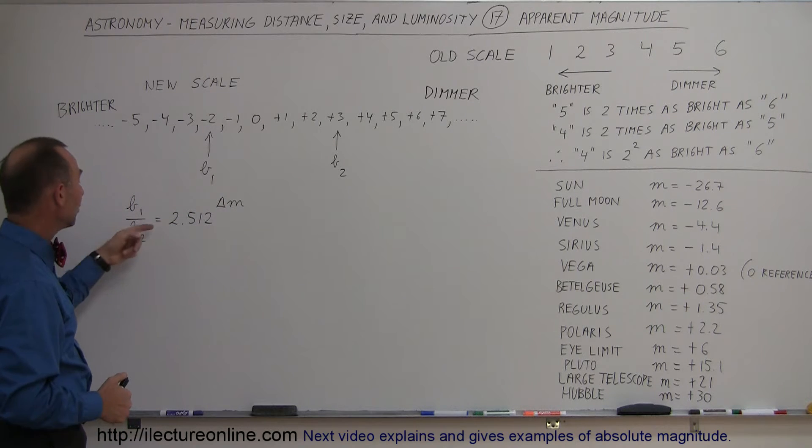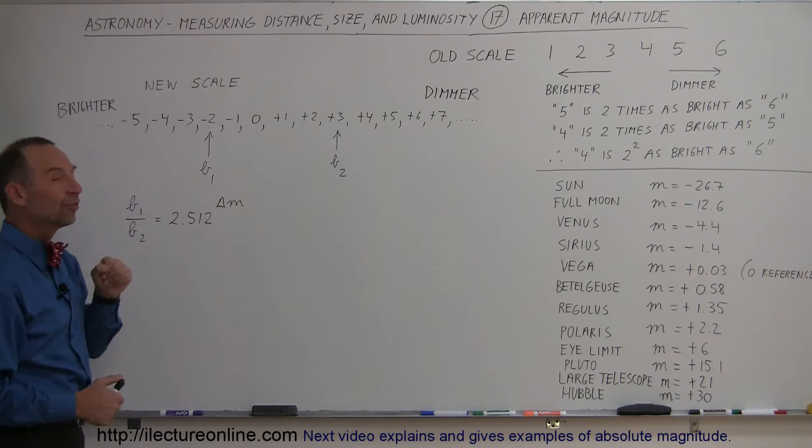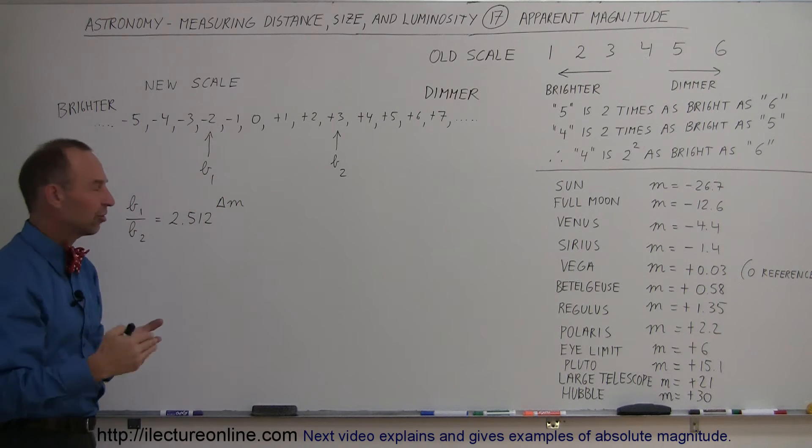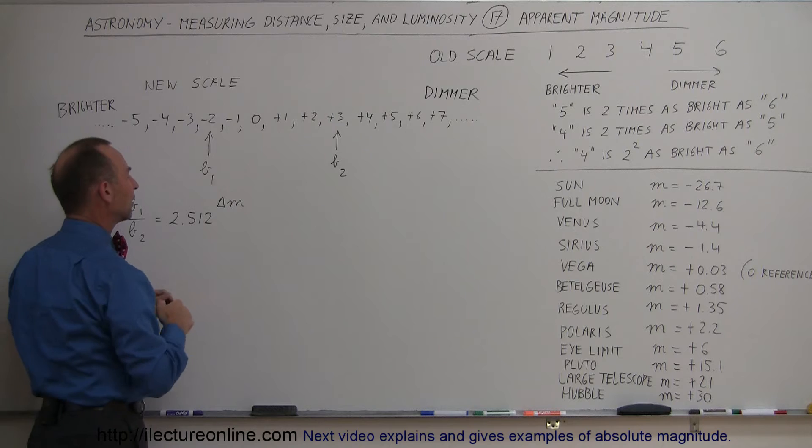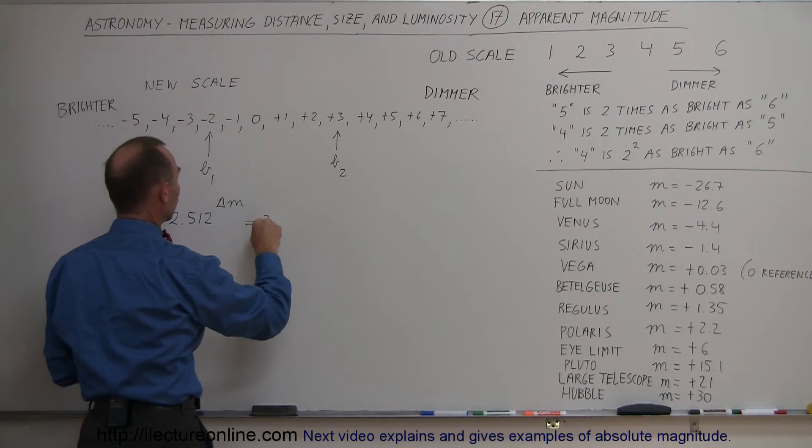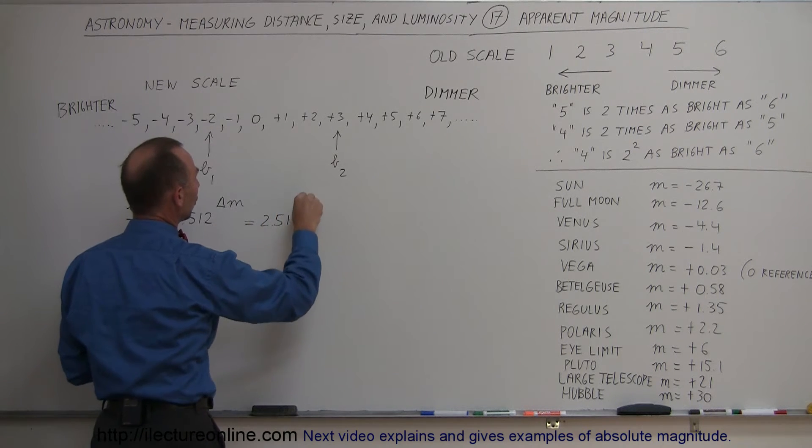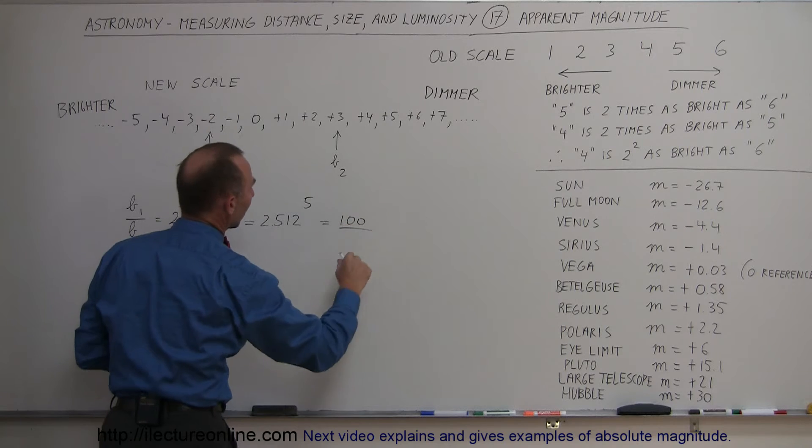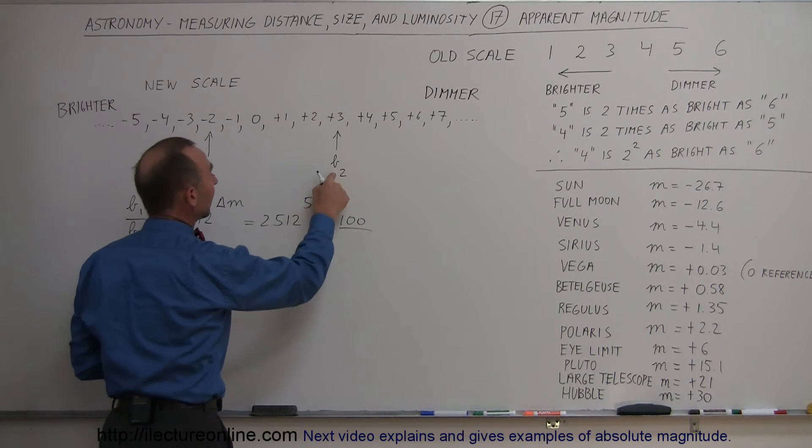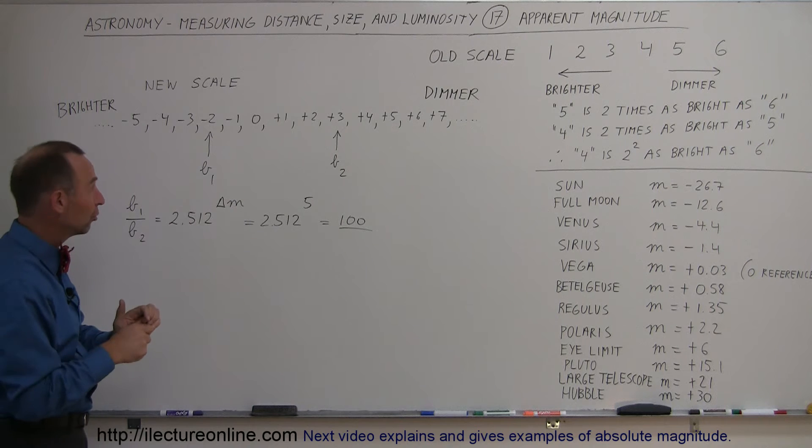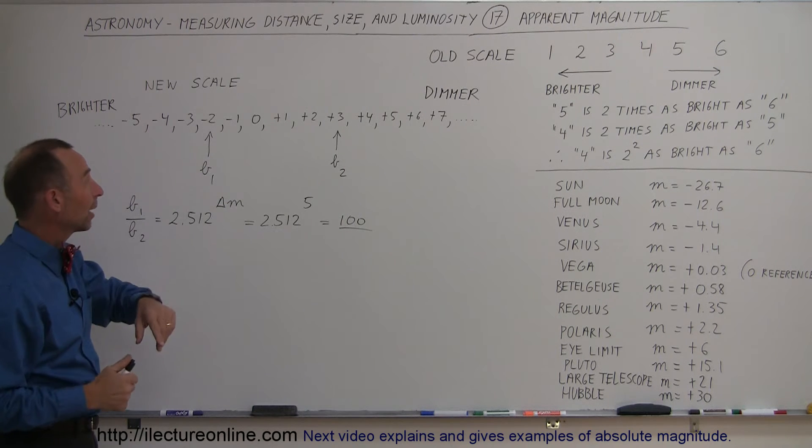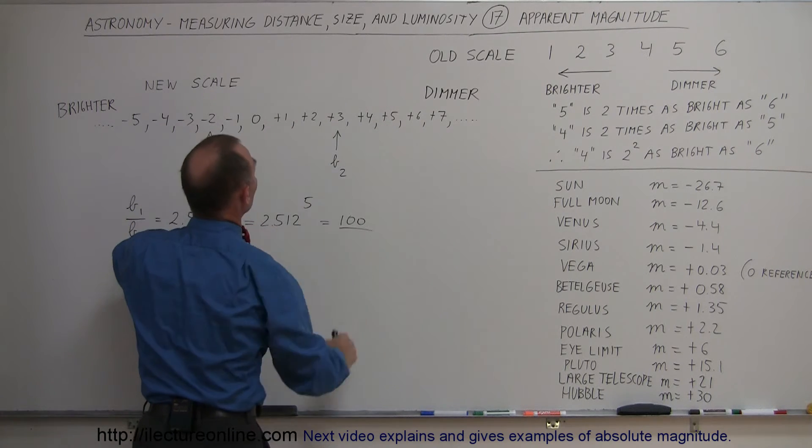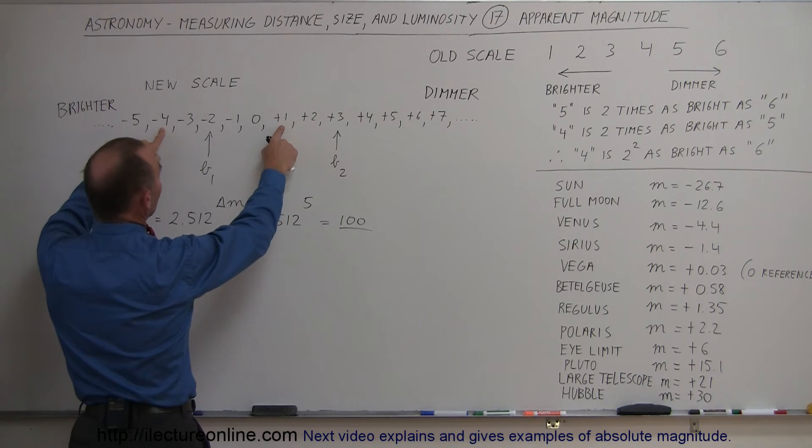In that old scale, they used just the number two, but they realized they had to adjust it, so they adjusted it to 2.512 to the delta m. In our particular case, that would be equal to 2.512 to the fifth power, because that's the difference between three and minus two, which is actually equal to 100, which meant that this star will be a hundred times as bright as this star. As long as there's five magnitudes in between, one star is a hundred times as bright as the other. For example, a magnitude zero star is a hundred times as bright as the magnitude five star.